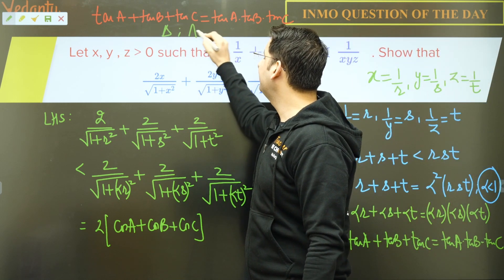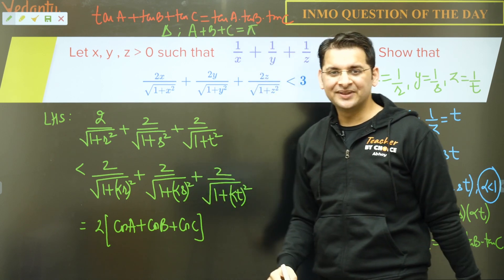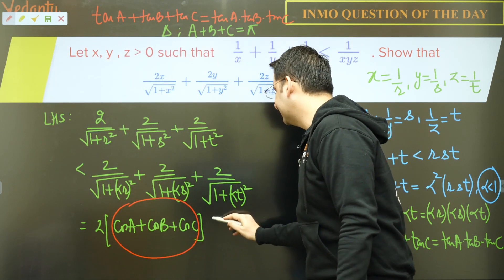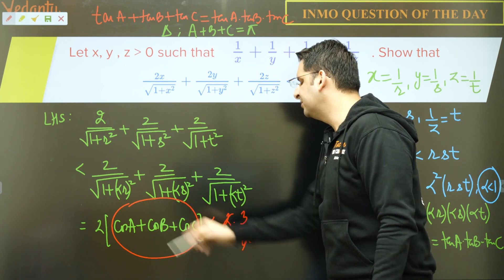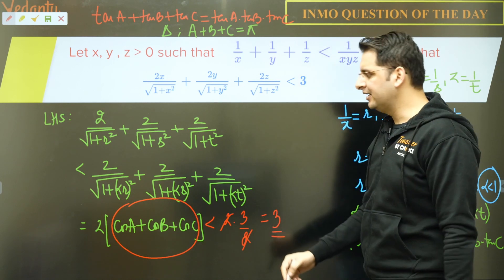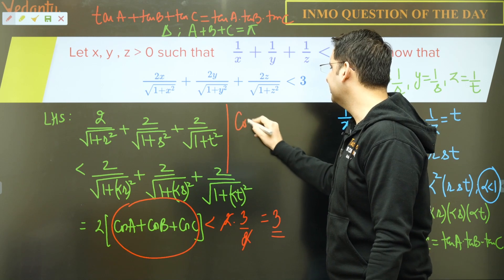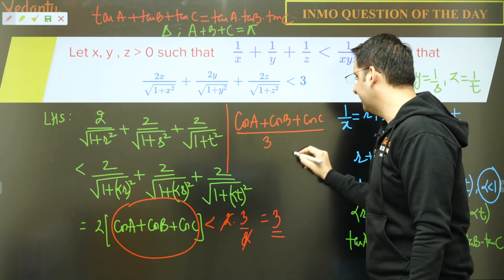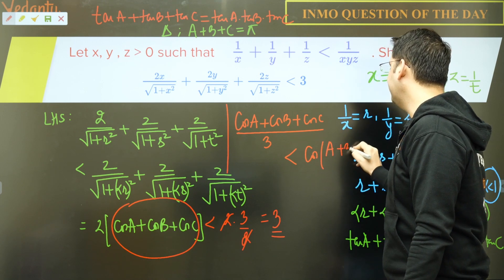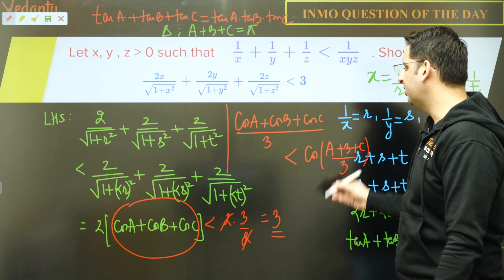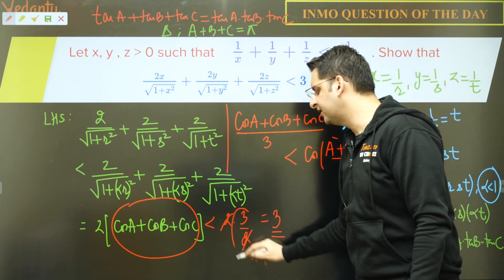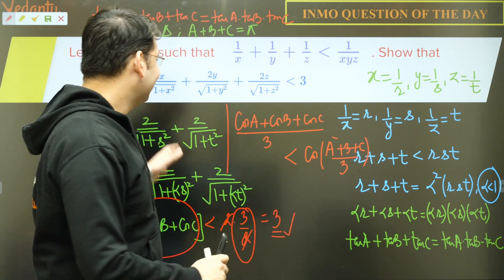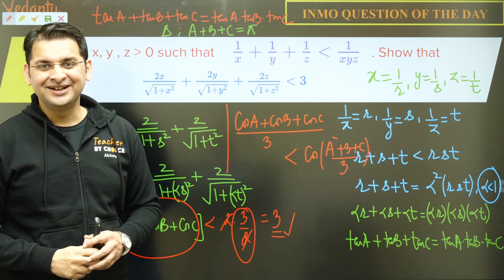This is a valid triangle since tan A + tan B + tan C = tan A · tan B · tan C, meaning A + B + C = π. In any triangle, the maximum value of cos A + cos B + cos C is 3/2 (achieved for equilateral triangles). We can also prove this via Jensen's inequality: (cos A + cos B + cos C)/3 ≤ cos((A+B+C)/3) = cos(π/3) = 1/2, giving 3/2. Therefore the expression is less than 2 × 3/2 = 3. Keep learning, enjoy!